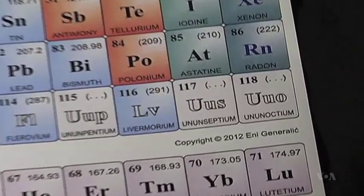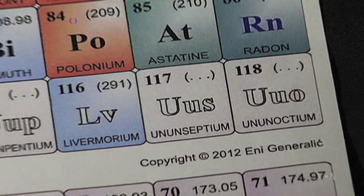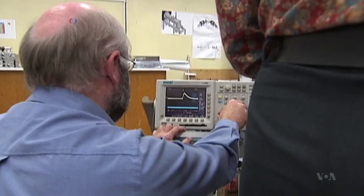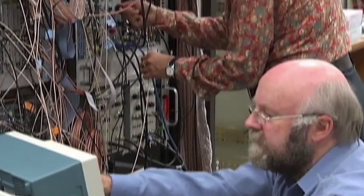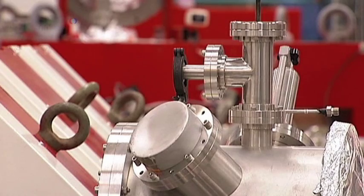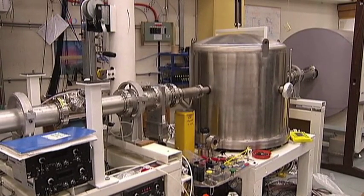It's been temporarily named ununseptium and is 40% heavier than lead. Professor David Hind of the Australian National University says a beam of calcium-48 nuclei from an accelerator flies into a scattering chamber where it hits atoms of berkelium-249.